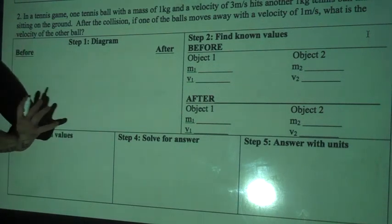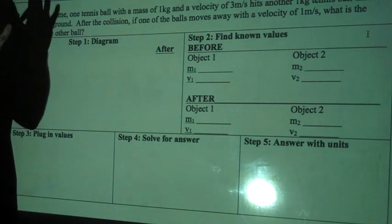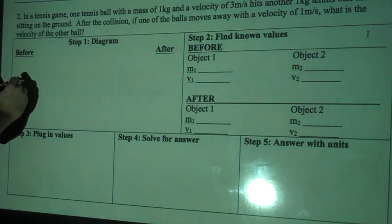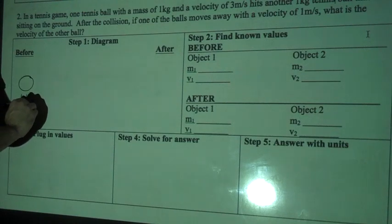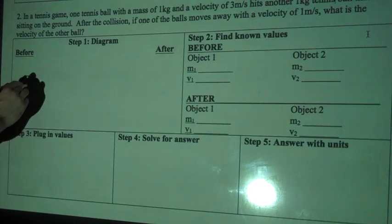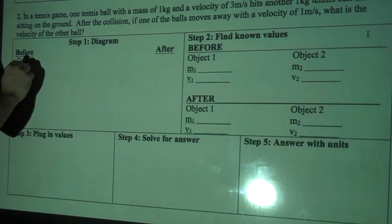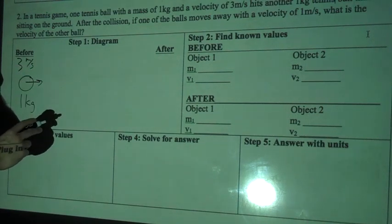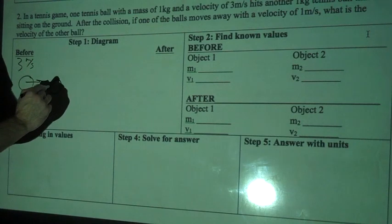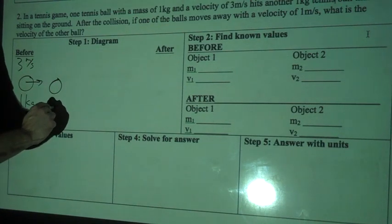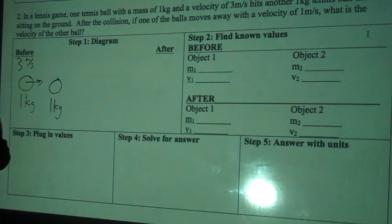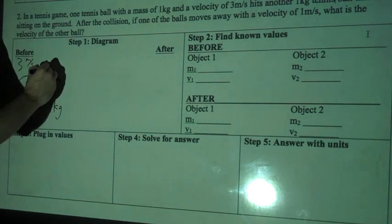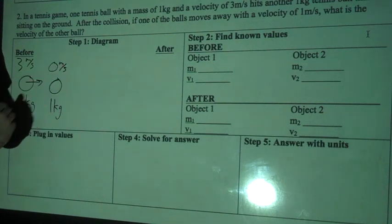I'm going to do the before picture before we read the rest of the question, just so I'm set up and ready to go. So one of my tennis balls has a mass of one kilogram and a velocity of three meters per second — it's moving this way. My second tennis ball has a mass of one kilogram, and it's sitting on the ground, so it's at rest. We assume the velocity is zero meters per second.